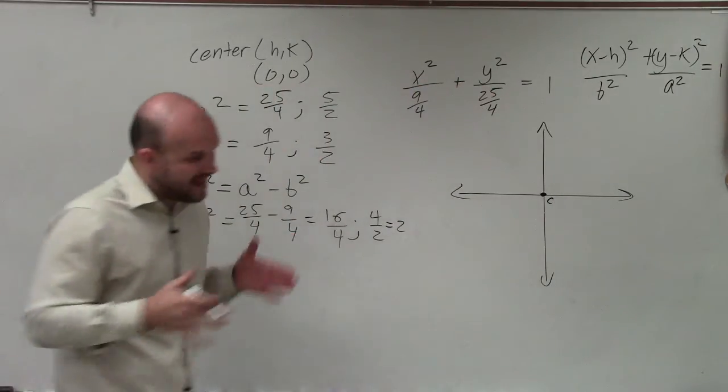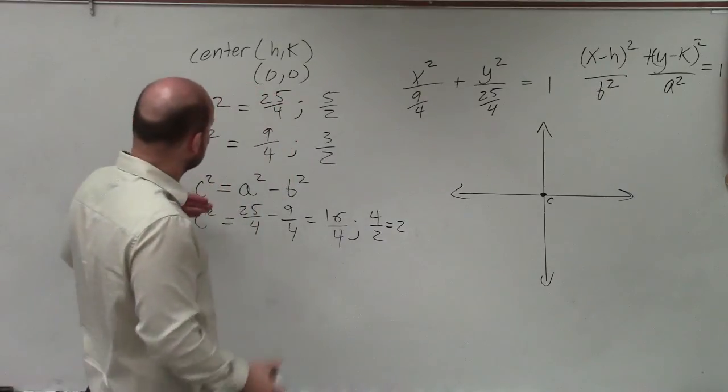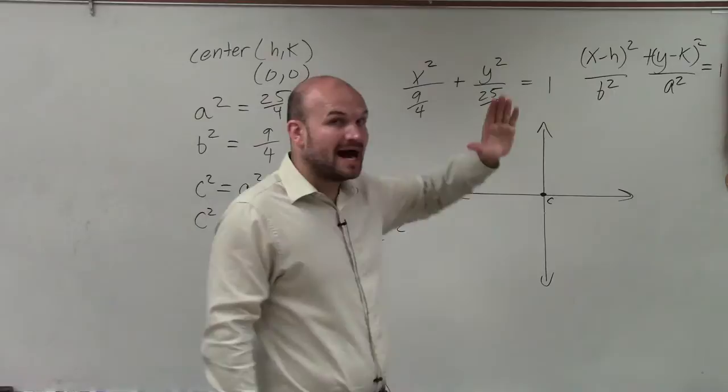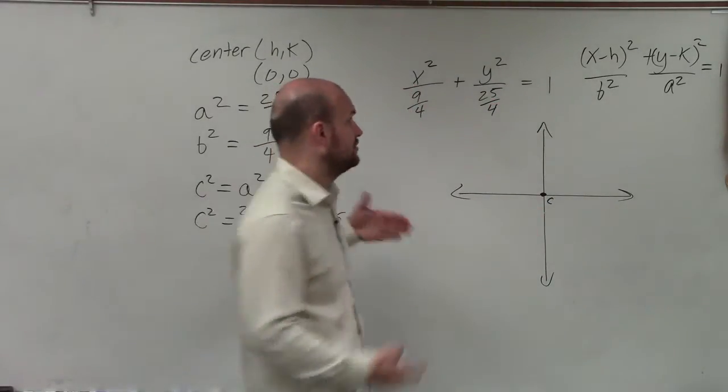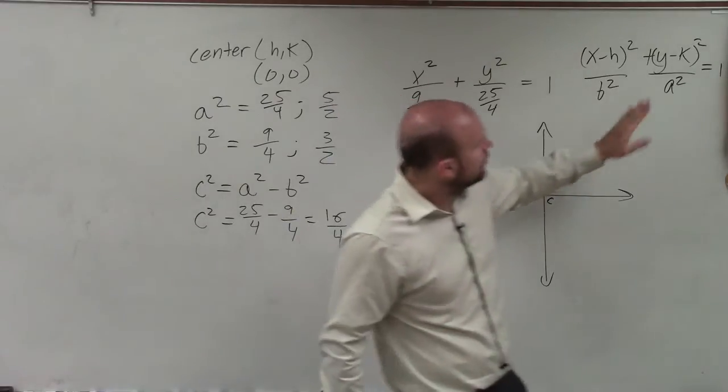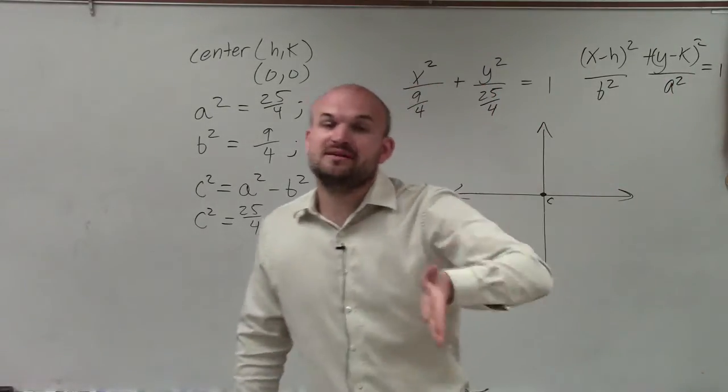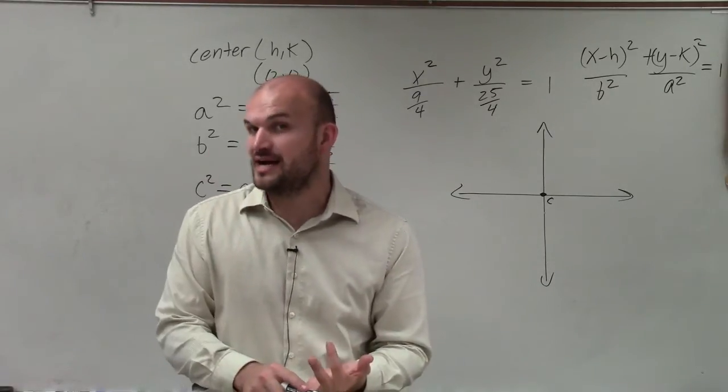And now remember, a is the distance from the center to the vertice. And since we know that my a is under my y, we know that that's going to be going vertical, right? The major axis is vertical. And that's very important for us to understand. Whenever the a² is under the y, that means the larger of two numbers under y, that means my major axis is vertical. And that's where your center, your vertices, and your foci all lie.